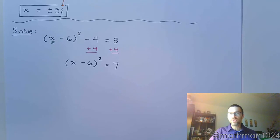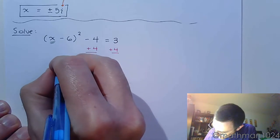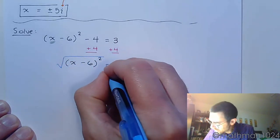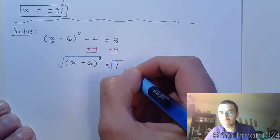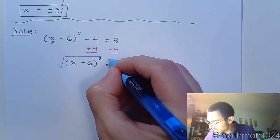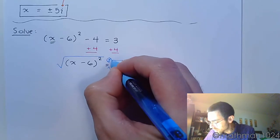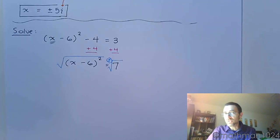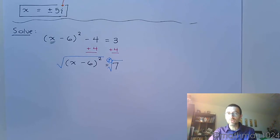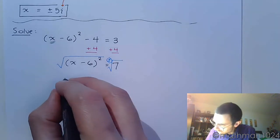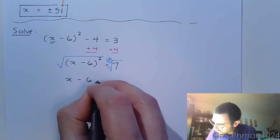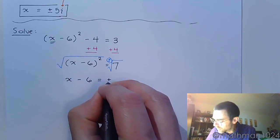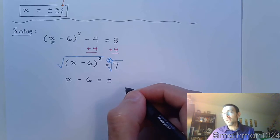Adding 4 to both sides gives me (x − 6)² = 7. Now that the square is by itself, I take the square root of both sides using the blue pen. Don't forget your plus or minus — you're supposed to have two solutions because this is quadratic, and without that plus or minus you'll only have one.